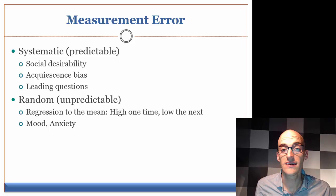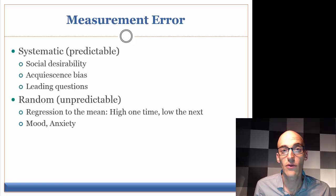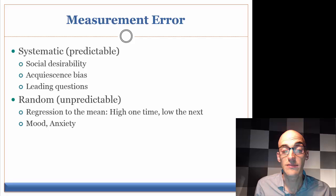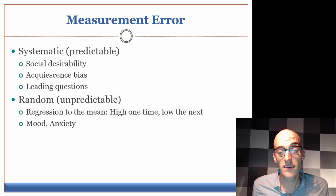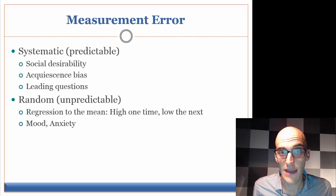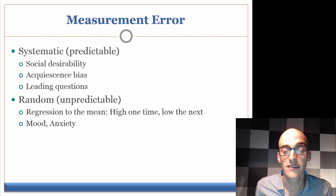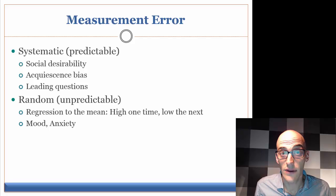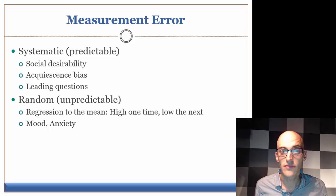The last systematic error the text discusses is leading questions — where you give some type of verbal or non-verbal cue to the respondent that they're going to please you by responding in a certain way, which may or may not reflect their true feelings. Ultimately, the way to avoid these systematic measurement errors is to try to get somebody else to review the questions, use them with different populations, and try to ensure the validity and reliability of your measures.